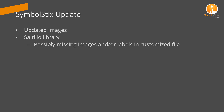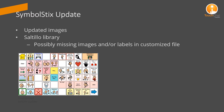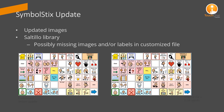Since the library has been updated, you might find missing images and/or labels in your customized files. On the left is a file customized before the update and on the right a default file. The image for No Way is missing on the left and is present on the default file of 2.24.